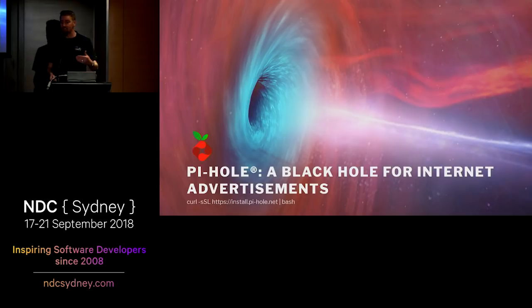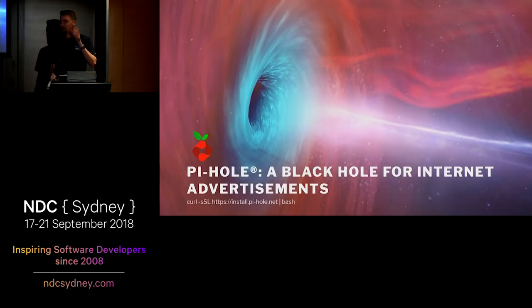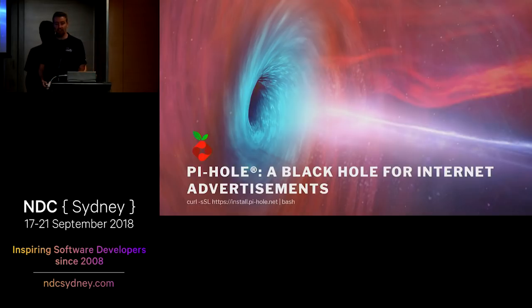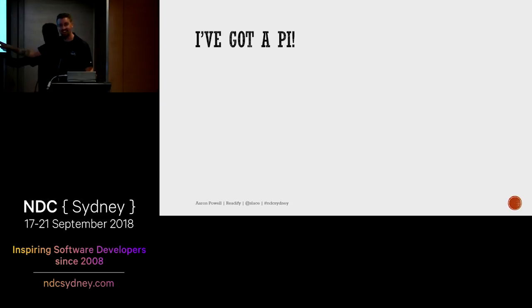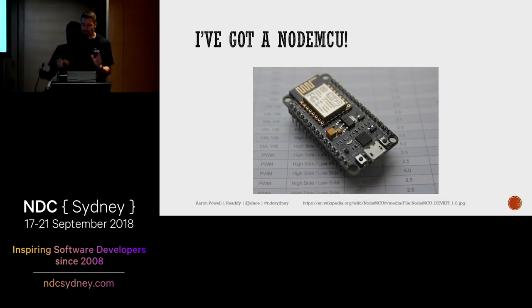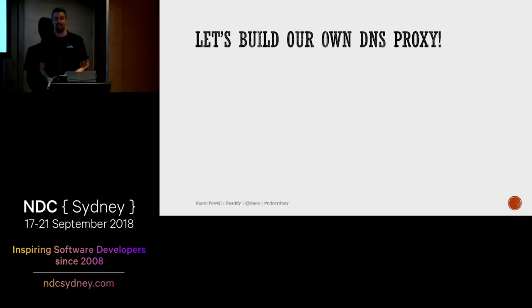Sure, we have ad blockers in browsers, but if we can block at a DNS level, we can block it on mobile devices and on your IPTV too — it's just going through the local DNS on your home network. And like every good developer, I've got a Raspberry Pi at home sitting in a drawer. This is a picture of my Raspberry Pi. It is literally somewhere in my house; I do not know where it is and it is not responding to ping. But I also have a NodeMCU — a tiny little microprocessor. Well, I might not have a Raspberry Pi, but I do have this. So let's build our own DNS proxy server.